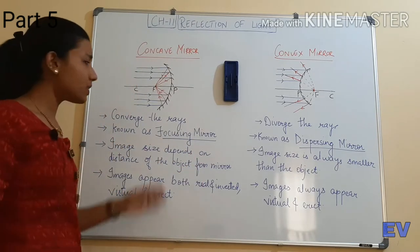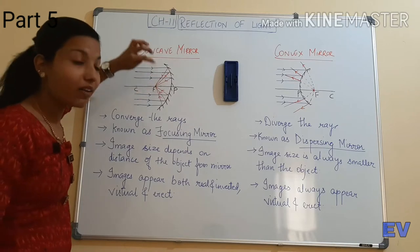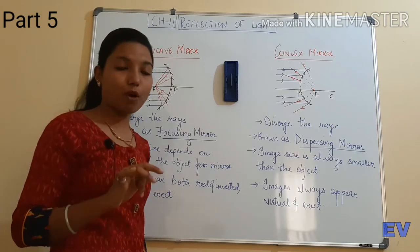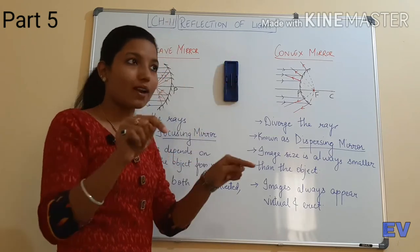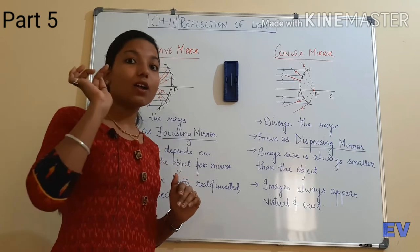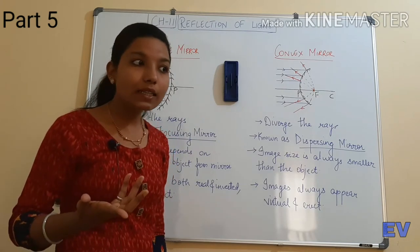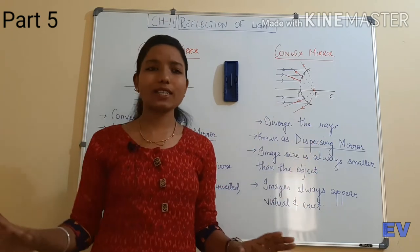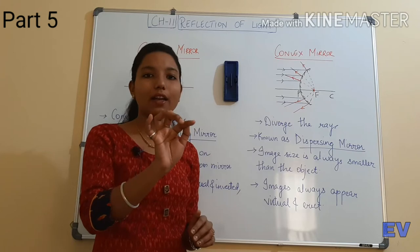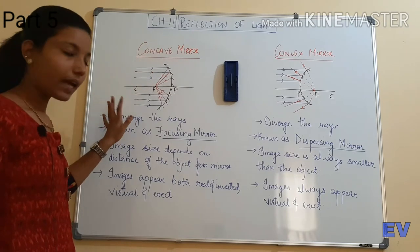Second point: concave mirror is known as a focusing mirror. Since it is converging, it collects all reflected rays at one point — it focuses them. Just like a camera: when you click a photo, if focus is not proper, the image is blurry. When you tap the screen, a green square blinks and then it focuses. Similarly, the concave mirror automatically focuses, so it is known as a focusing mirror.